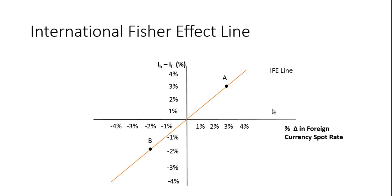Graphically, we draw a line for the international Fisher effect where the x-axis shows the difference in the two interest rates. For the international Fisher effect to hold, data points should lie on a 45-degree line. Points off this line indicate the effect doesn't hold. To summarize: the international Fisher effect combines the Fisher effect with relative purchasing power parity, saying that instead of looking at differentials in inflation rates, we look at differentials in nominal rates to determine expected changes in exchange rates.